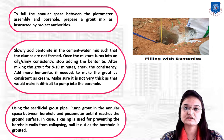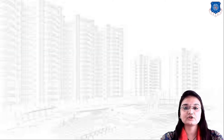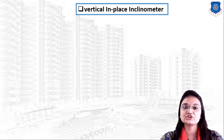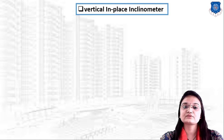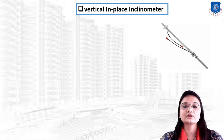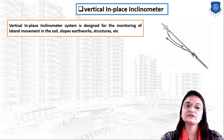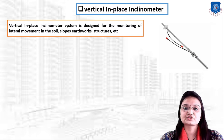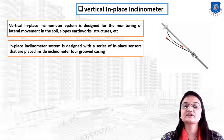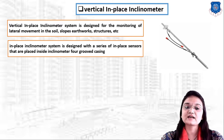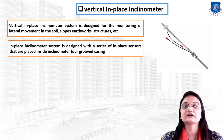This completes the piezometer installation procedure. Next is the inclinometer, of which there are two types: in-place inclinometer and digital inclinometer. The vertical in-place inclinometer system is designed for monitoring lateral movement in soils, slopes, and earthwork structures. It uses a series of in-place sensors placed inside inclinometer grooved casing. Each sensor is equipped with pivoted sprung wheels designed to fit perfectly in the grooves of the inclinometer casing.